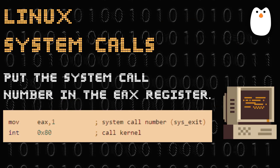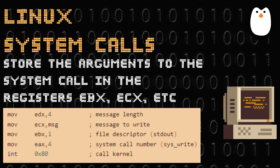We can make use of Linux system calls in our assembly programs by following these steps. The first step is to put the system call number in the EAX register — this number identifies which system call you want to use. Then you store the arguments for the system call in registers like EBX, ECX, EDX, etc. These registers hold the values you want to pass to the system call.